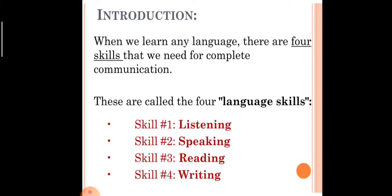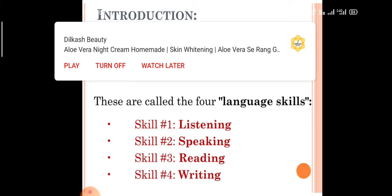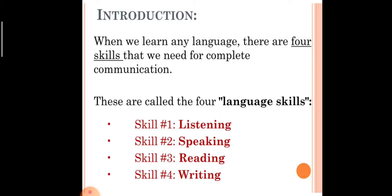Listening and Speaking — First Introduction. When we learn any language, there are four skills that we need for complete communication. These are called the four language skills. Skill number 1 is Listening. Skill number 2 is Speaking. Skill number 3 is Reading. And skill number 4 is Writing. Please remember: Listening, Speaking, Reading, and Writing are the four skills for complete communication.